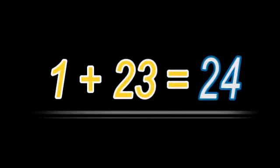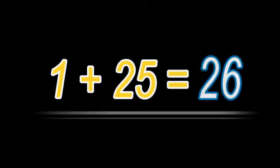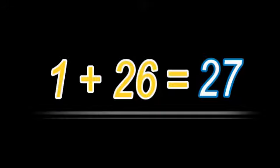One plus twenty-three equals twenty-four. One plus twenty-four equals twenty-five. One plus twenty-five equals twenty-six. 1 plus 26 equals 27.